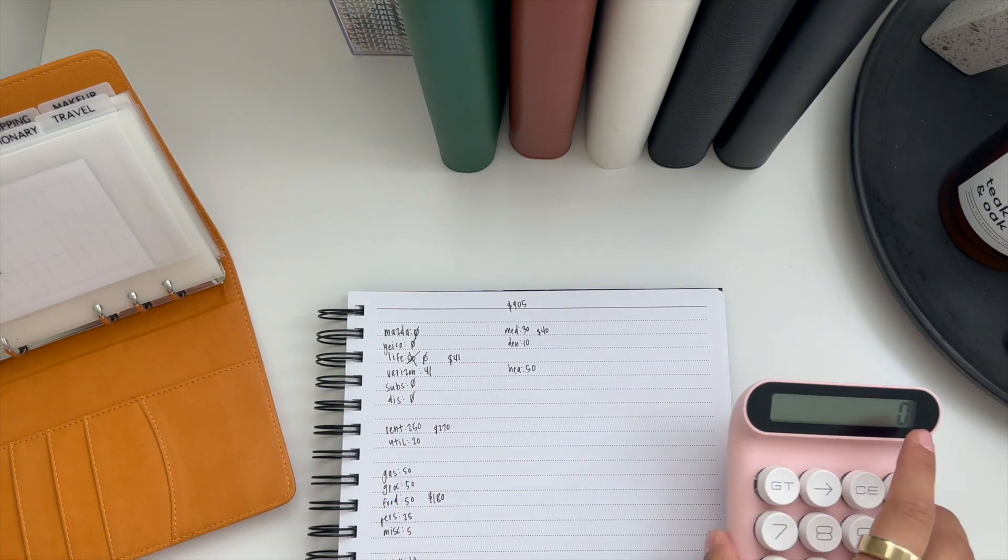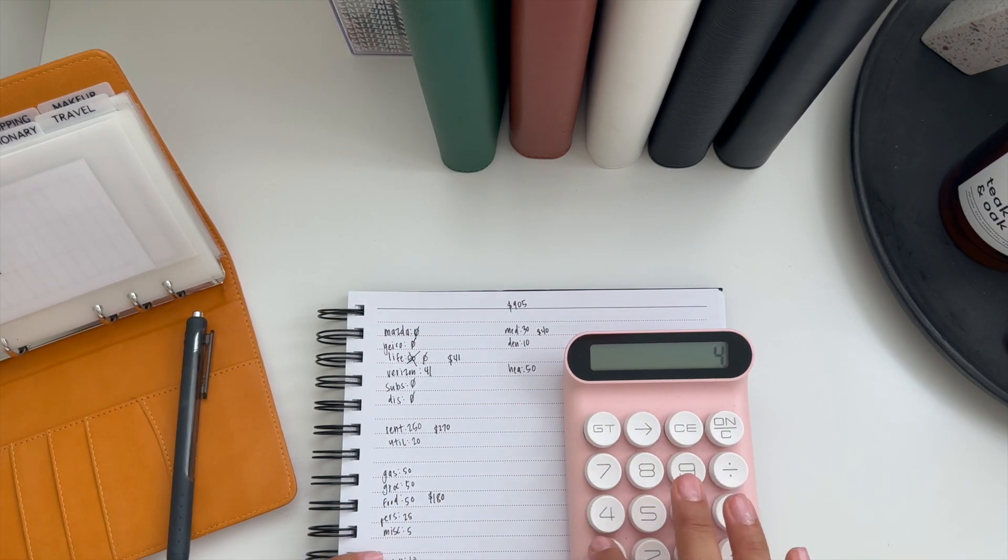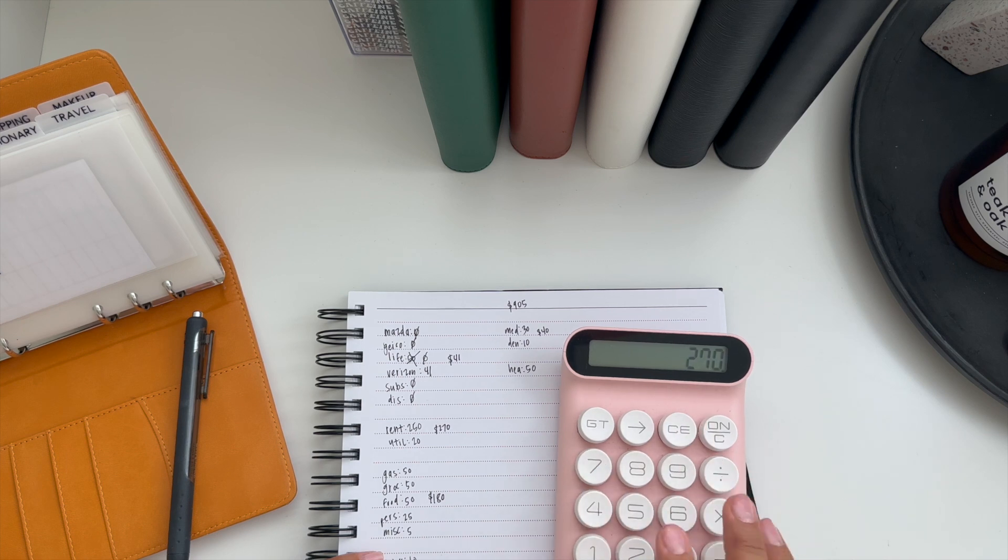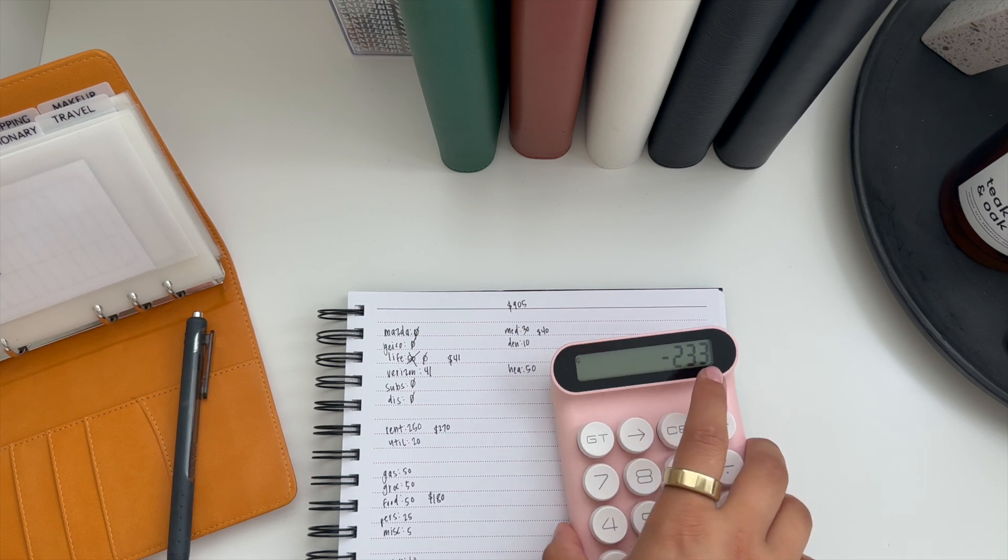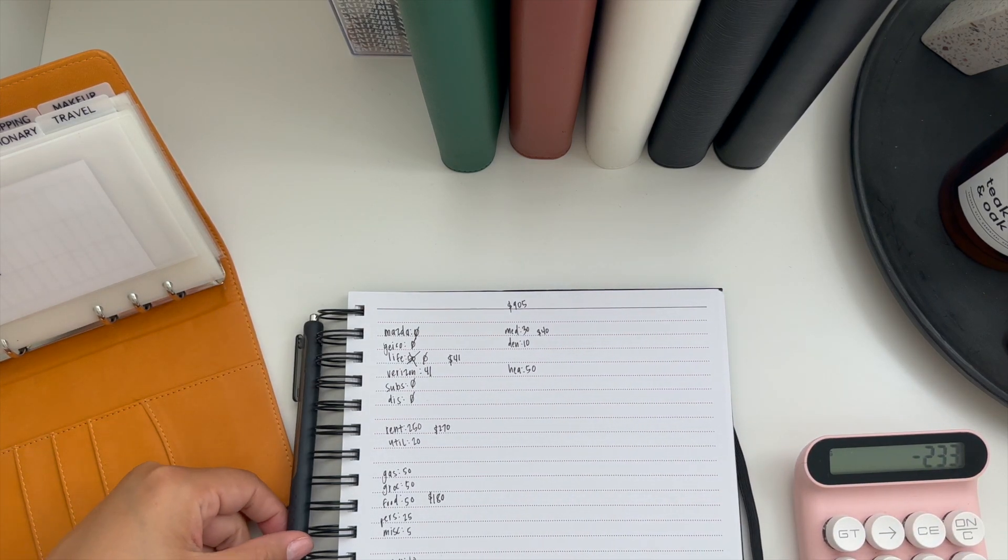So let's see where we're at right now so far. So $41 plus $270 plus $180 plus $91 plus $40 plus $50 equals $672 minus $905. So we have $233 left to stuff, which is amazing.